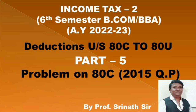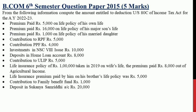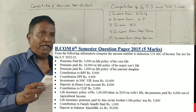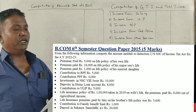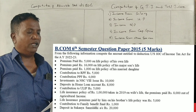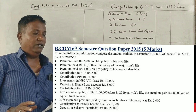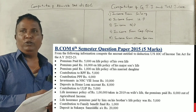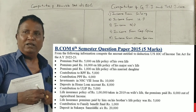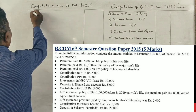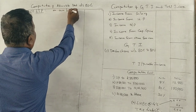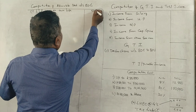From the following information, compute the amount entitled to deduction under Section 80C of the Income Tax Act. Premium paid rupees 5,000 on life insurance policy of his own life. This policy amount qualifies. For your own life, this applies — 5,000.